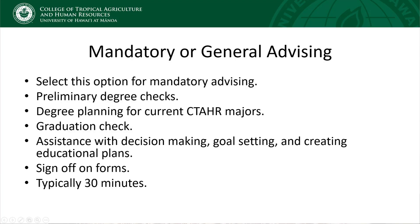Once you are a continuing CTAHR student, you should select the mandatory or general advising appointment type. This appointment will satisfy your mandatory advising requirement. We will cover planning, assist with decision making, goal setting, and creating educational plans. We will also sign off on forms and do a graduation check. This type of appointment usually takes about 30 minutes.